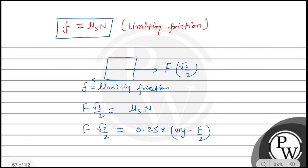Now we'll simply solve this. We get F√3/2 equals 0.25, which we can write as 1/4, times (mg)/4 minus F/8.